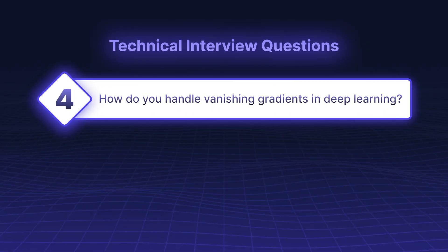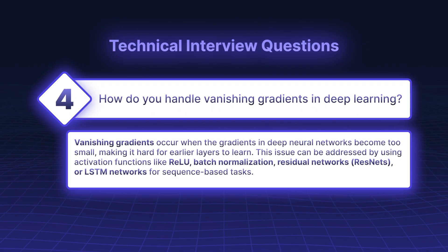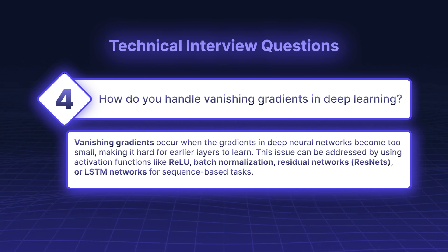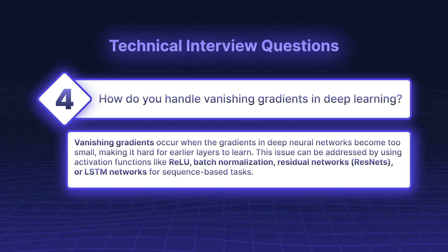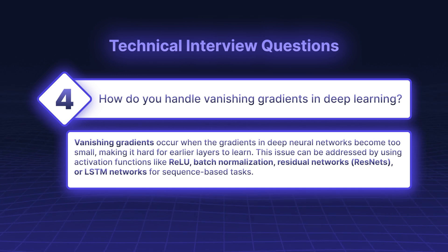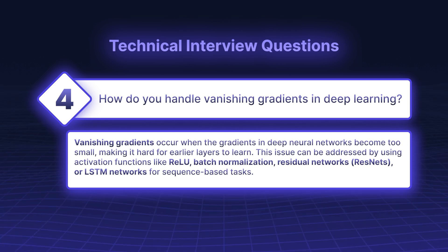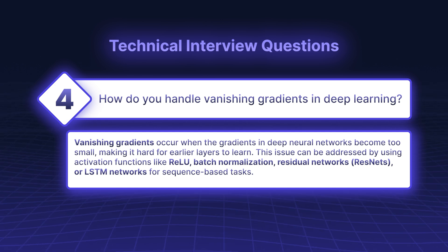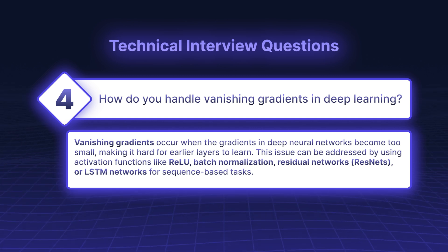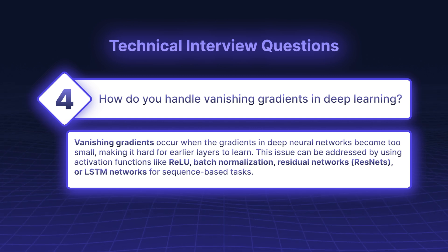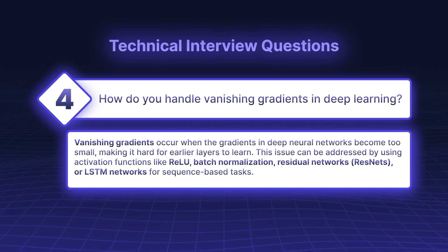How do you handle vanishing gradients in deep learning? Vanishing gradients occur when the gradients in deep neural networks become too small, making it hard for earlier layers to learn. This issue can be addressed by using activation functions like ReLU, batch normalization, residual networks (ResNets), or LSTM networks for sequence-based tasks.